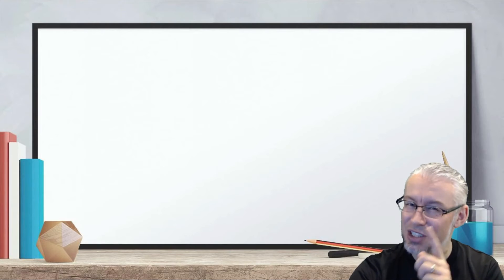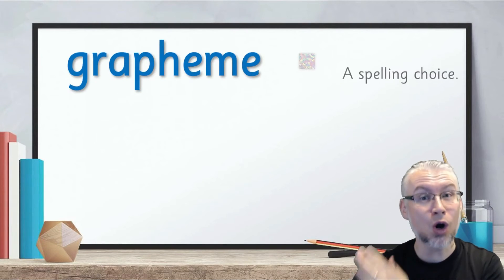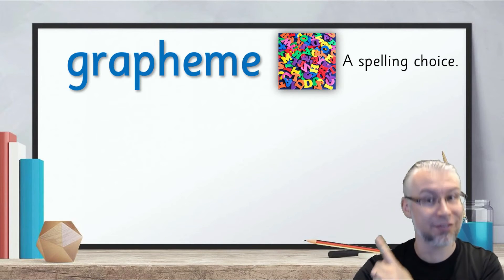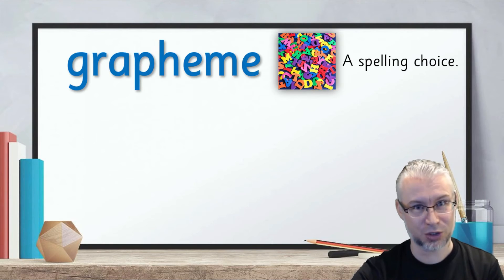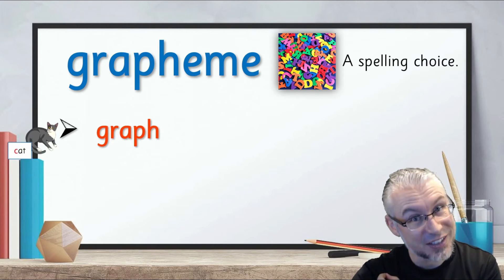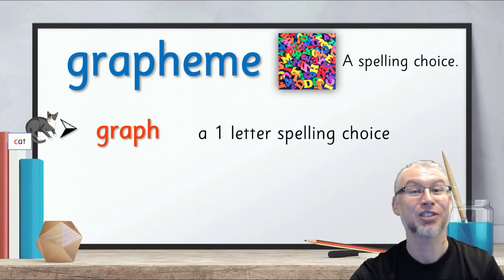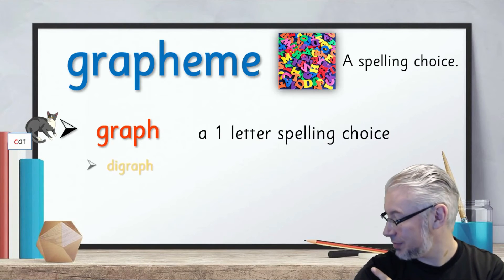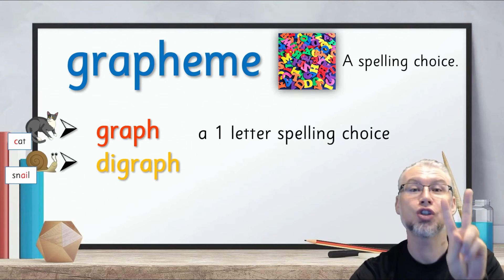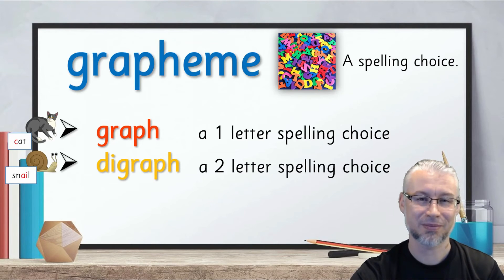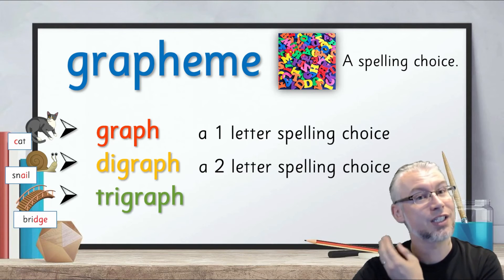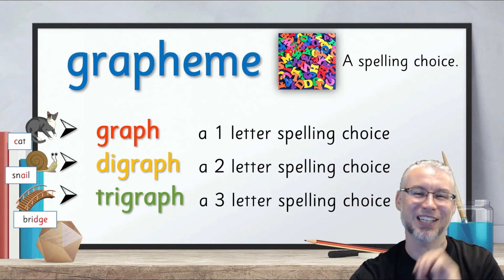Did you get it? Let's look at that one more time. All of them — a graph, a digraph, and a trigraph — are graphemes. They're all spelling choices. But a graph, like K as in cat, is a one-letter spelling choice. A digraph, just like A as in snail, is a two-letter spelling choice. And a trigraph, for example J as in bridge, is a three-letter spelling choice.